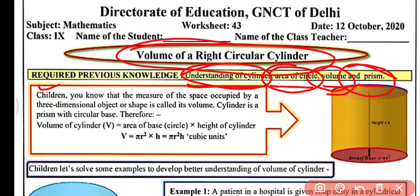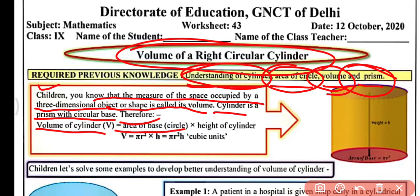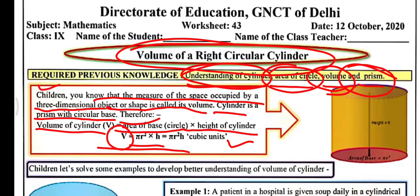The measure of space occupied by a three-dimensional object or shape is called its volume. A cylinder is a prism with a circular base. Therefore, the volume of a cylinder equals the area of the base circle, that is πr², multiplied by the height h. So the volume of a cylinder equals πr²h cubic units.